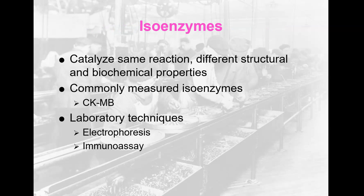Isoenzymes catalyze the same reaction but have different structural and biochemical properties, and are sometimes found in different locations in the body. For example, alkaline phosphatase, lactate dehydrogenase, and creatine kinase all have isoenzymes. CKMB — creatine kinase muscle-brain — is one of the commonly measured isoenzymes. LDH and alkaline phosphatase isoenzymes are not commonly measured, although you can measure them. Lab techniques for measuring isoenzymes are usually either electrophoresis or immunoassay, and immunoassay is what is used on an analyzer.